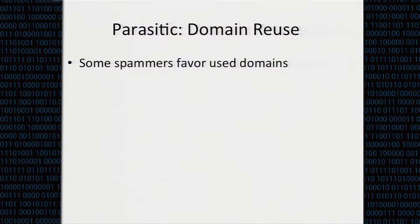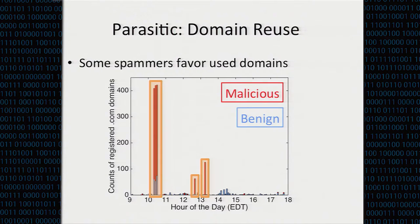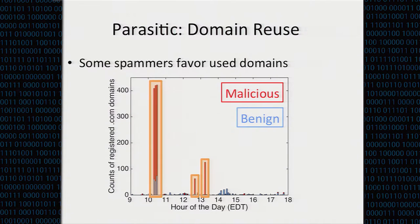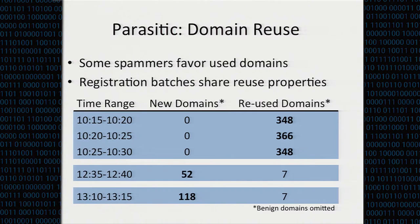Moving to the second observation — spammers are parasitic. Spammers will often favor previously used domains. Looking at the five high-volume intervals on our standout day, in the first three, spam domain registrations are entirely previously used domains. Many detection systems have no way of understanding when a domain has changed hands, so by picking up a previously used domain, the spammer essentially inherits any prior positive reputation that domain might have had.